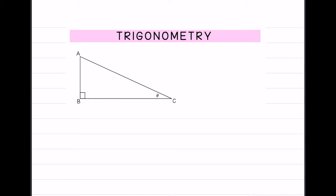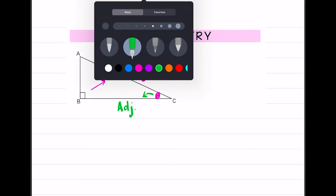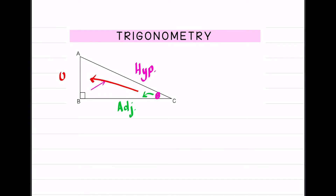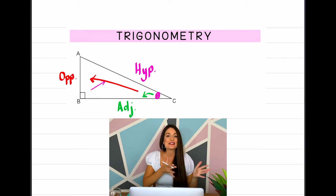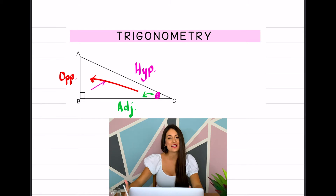Now with triangle ABC, I want to identify what these sides are in relation to the angle given as theta. Looking at angle theta at C: the hypotenuse always remains the hypotenuse — it's the side opposite the right angle and the longest side. The side touching or closest to theta is called the adjacent side. The side opposite theta is called the opposite.